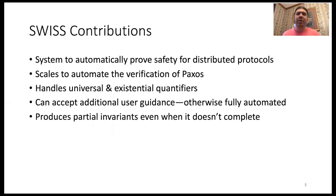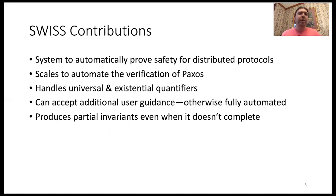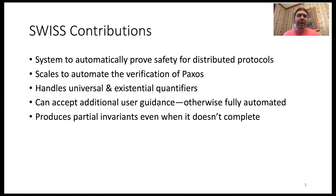That brings us to our system, SWISS, which is another system for automatically proving safety conditions of distributed protocols. It does scale to automate the verification of protocols like Paxos. By necessity, it is able to handle universal and existential quantifiers in its inductive invariants. It can also accept some additional user guidance to help its search, although it is otherwise fully automated. And finally, it is able to produce some partial invariants even when it doesn't fully complete its task, which may still be helpful to the user.